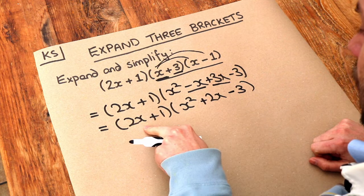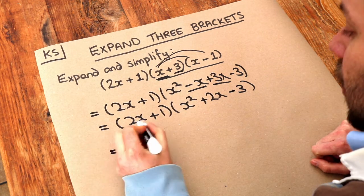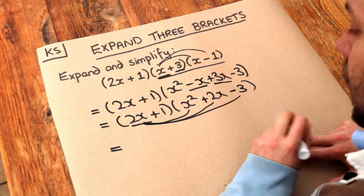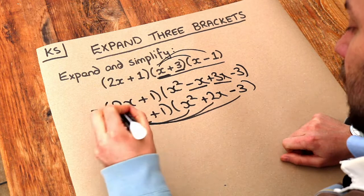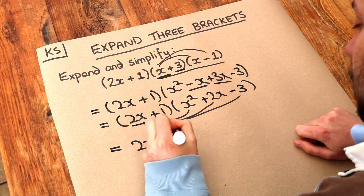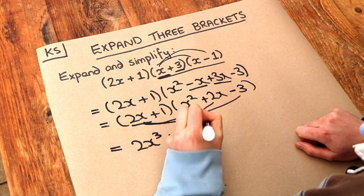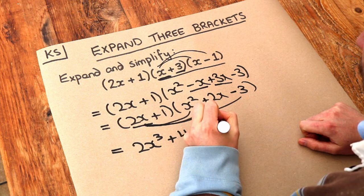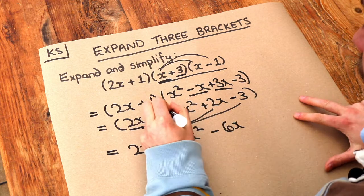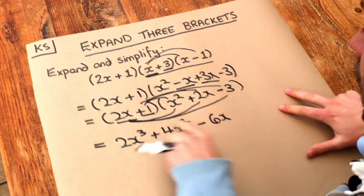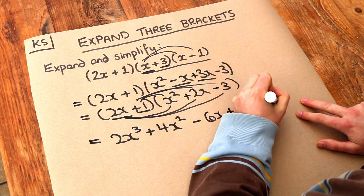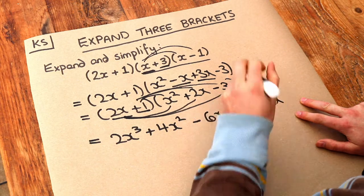We still do each thing in the first bracket multiplied by each thing in the second. So we do 2x times x squared, which is 2x cubed. We've got 2x times 2x, which is 4x squared, not 2x squared. And 2x times minus 3 is minus 6x. Then the second thing in the first bracket: 1 times x squared is plus x squared, 1 times 2x is just 2x, and 1 times minus 3 is minus 3.